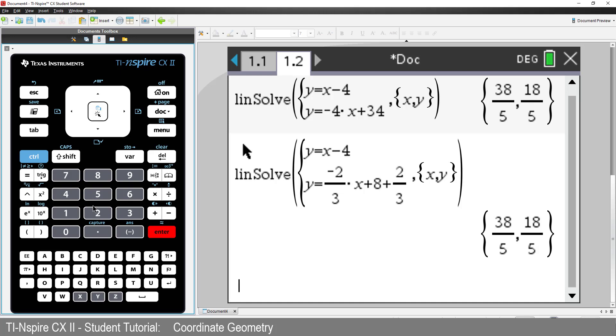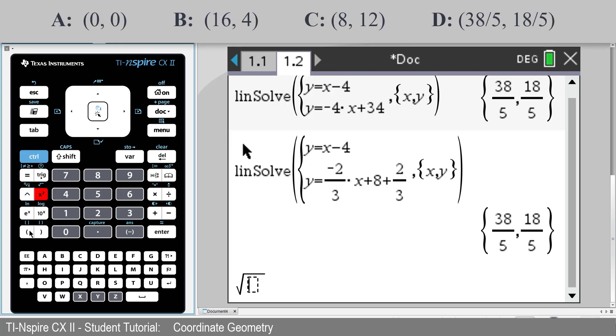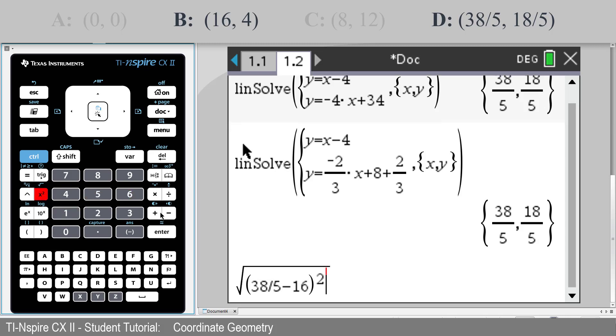Now there's something else that's interesting about this point. Let's check the distance from point D to each of the triangle's vertices. We can do this using the distance formula, which is the square root of 38 over 5 minus 16 all squared, plus 18 over 5 minus 4 all squared.